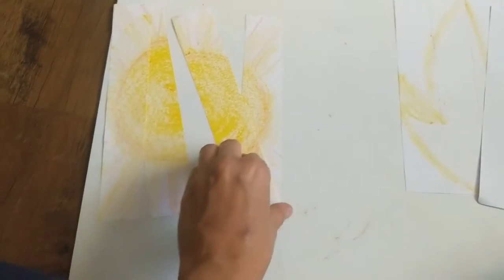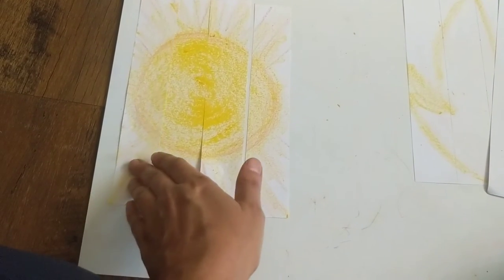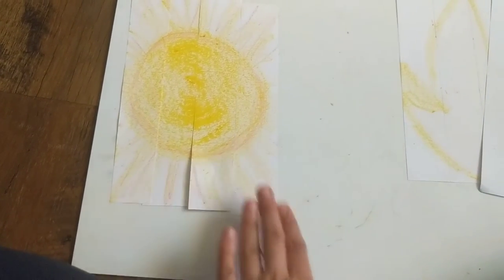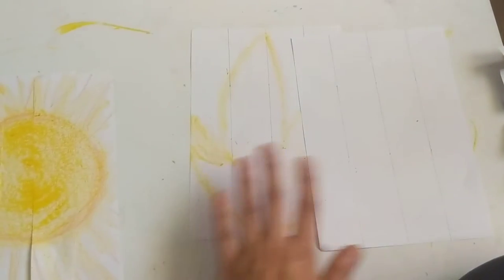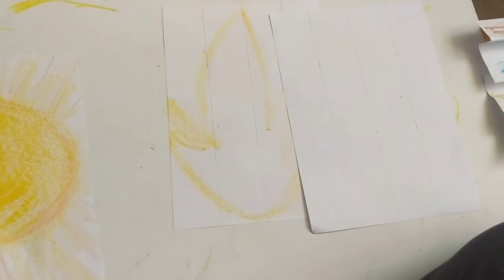We've basically drawn an image eight and a half by six, then we've cut those into four equal strips. Each strip is one and a half inches. Similarly we'll cut off these two images and then we will do the final gluing.